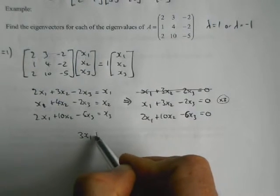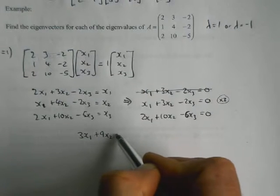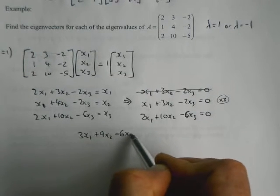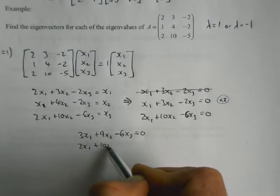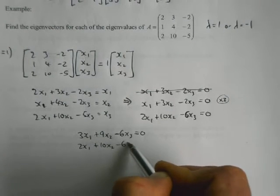So I'm going to multiply this equation by 3, which will give me 3x1 plus 9x2 minus 6x3 equals 0. And the bottom line is still the same.